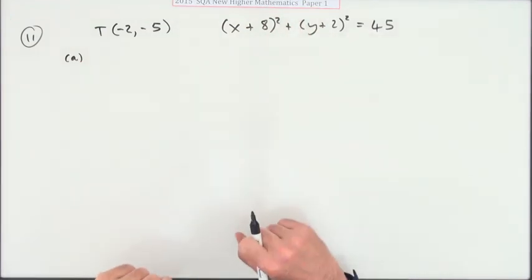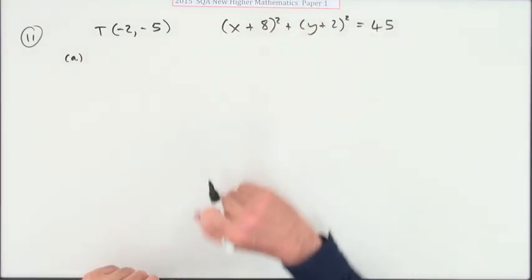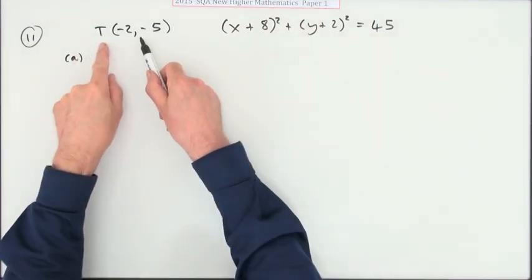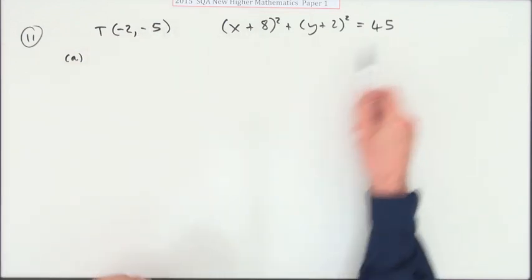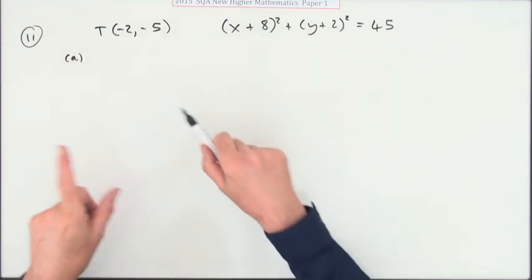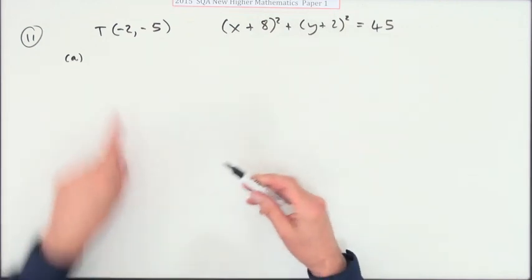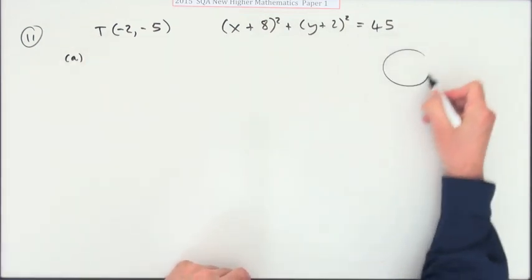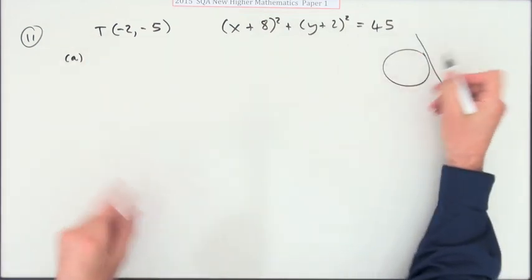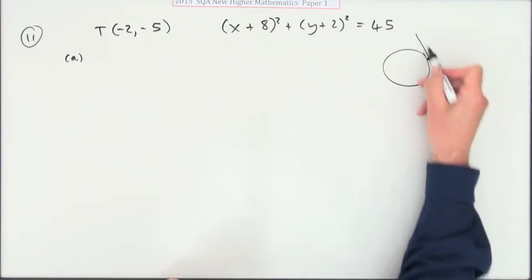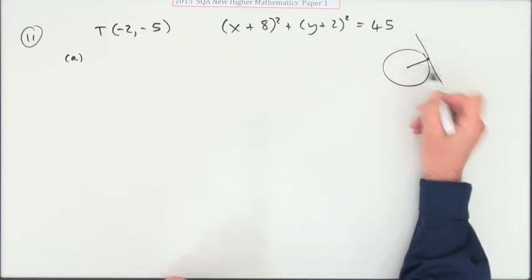Number 11 from Paper 1 of the 2015 New Hire. It says that this point lies on the circumference of the circle. Find the equation of the tangent to that circle at that point. You've got the circle—not saying this is the correct orientation or anything. What's the equation of this tangent? Well, it's got to be at right angles to the radius.